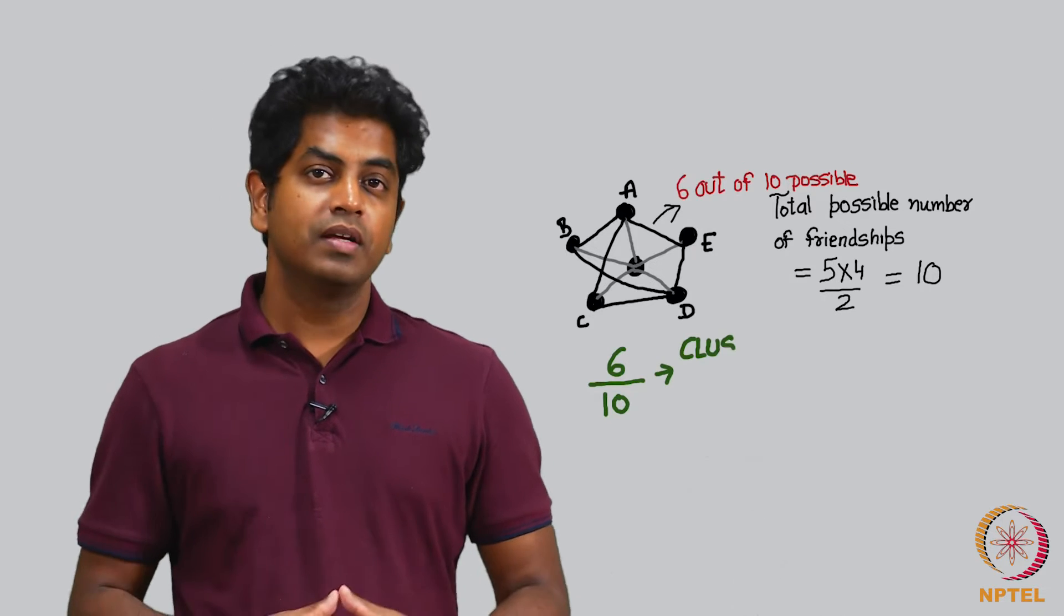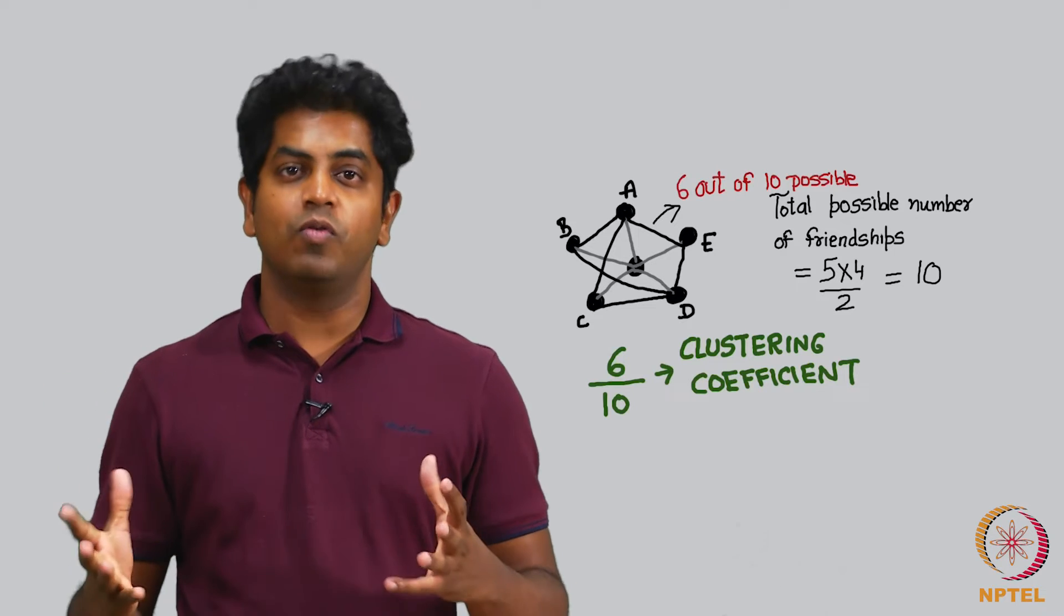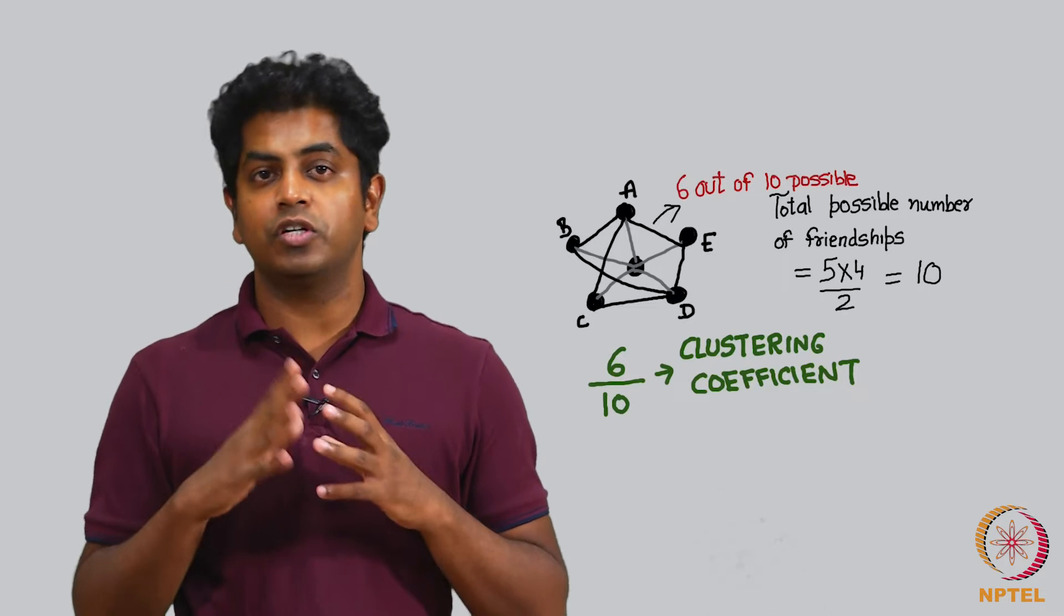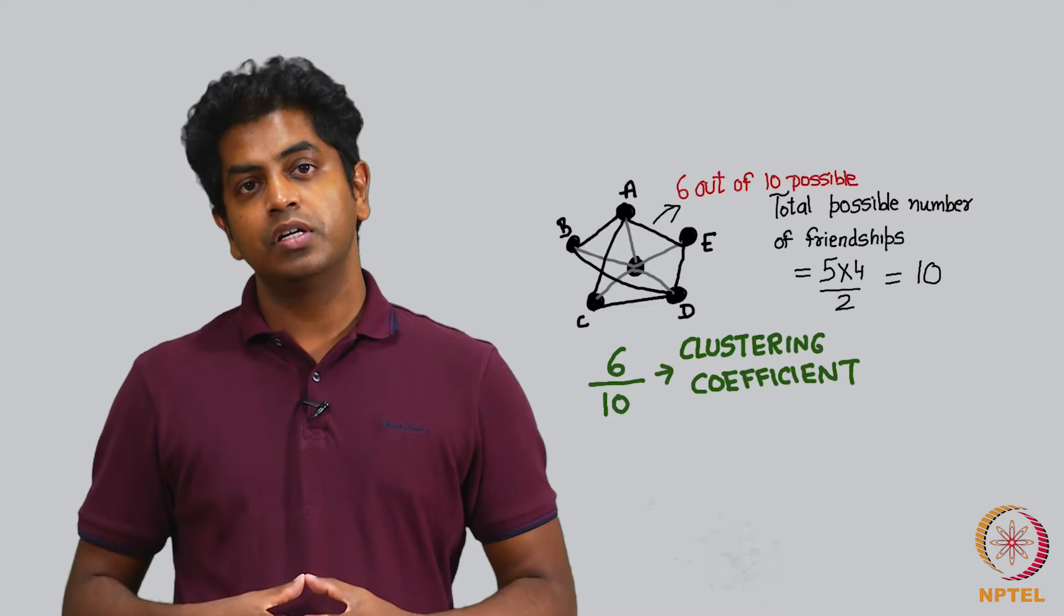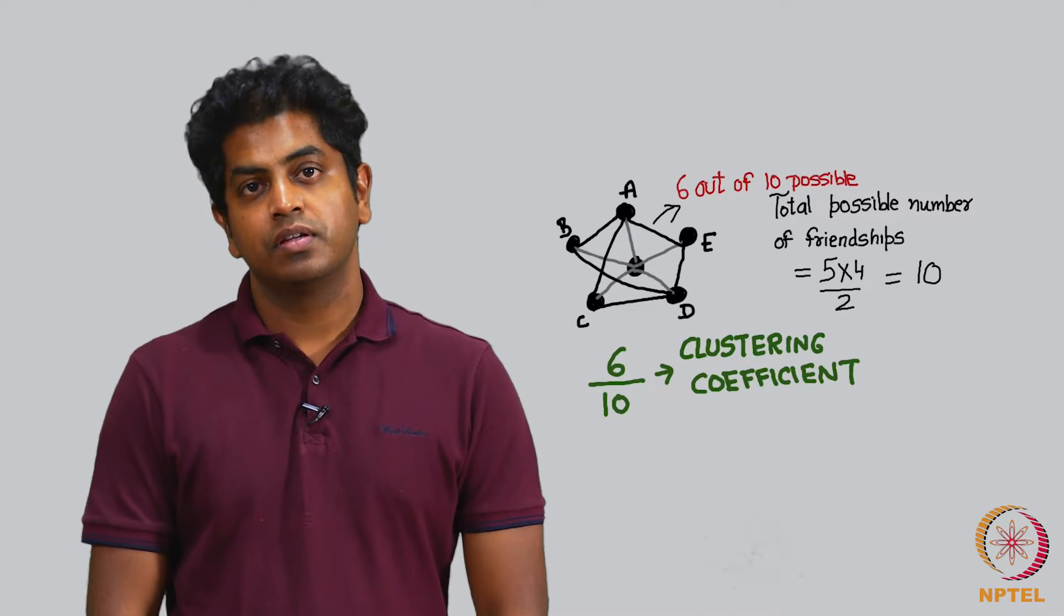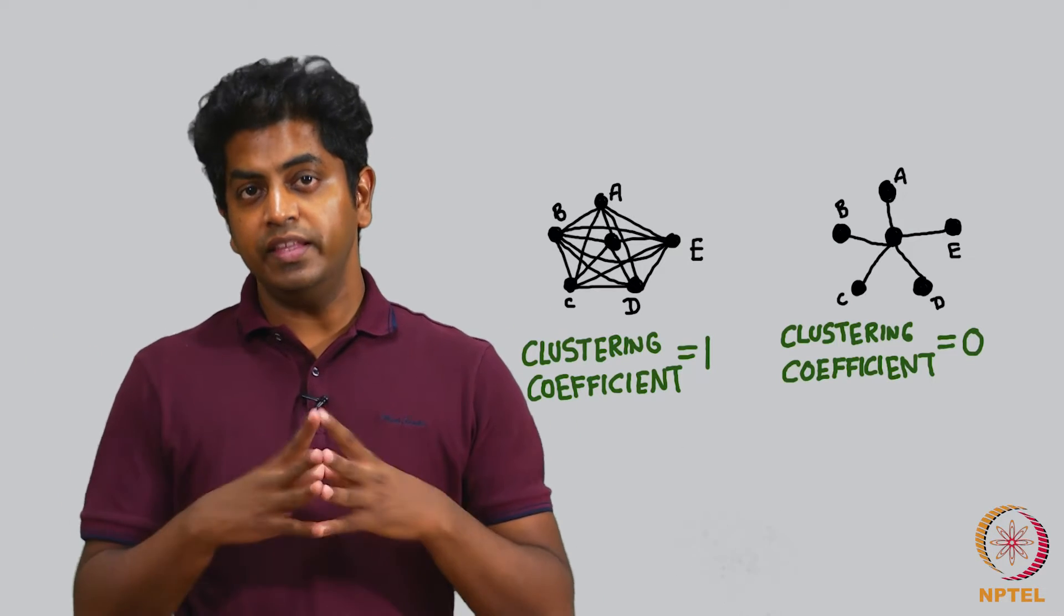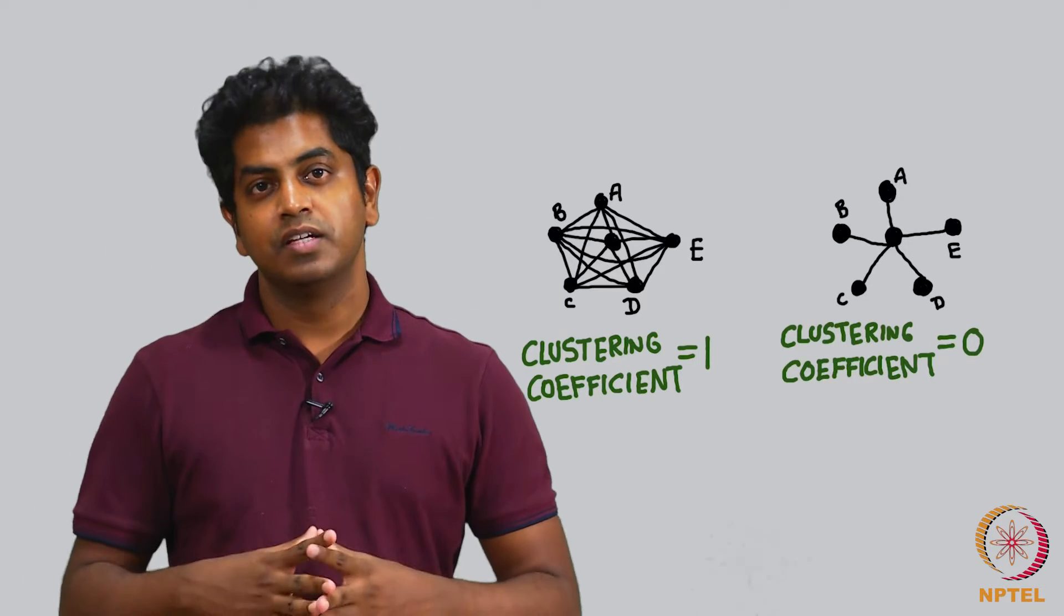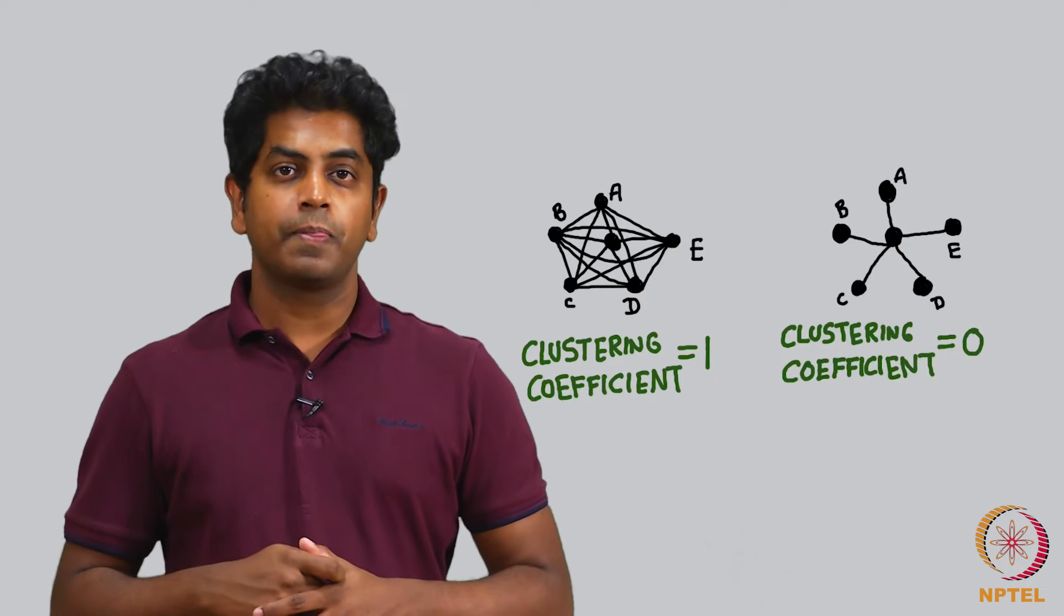This goes by the name clustering coefficient. We will be calling this the clustering coefficient from now onwards. What does clustering coefficient mean? In the numerator you put the total possible friendships between your friends, and in the denominator you put the total possible friendships. If this fraction is 1, it means all your friends know each other. If it is 0, then none of them know each other. Anything in between tells how strong are the friendships between your friends. So clustering coefficient is a very important concept in social networks.